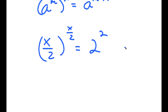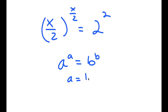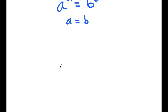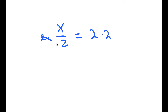So I get x over 2 to the power of x over 2 is equal to 2 to the power of 2. And if I have something in the form a to the power of a is equal to b to the power of b, this means that a equals b. So in this case, x over 2 is equal to 2. And if I multiply both sides by 2, I get x is equal to 4.